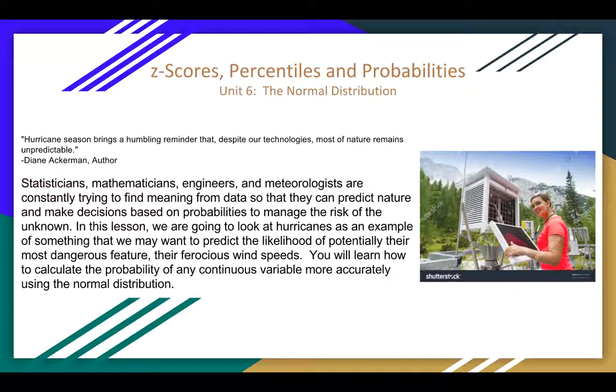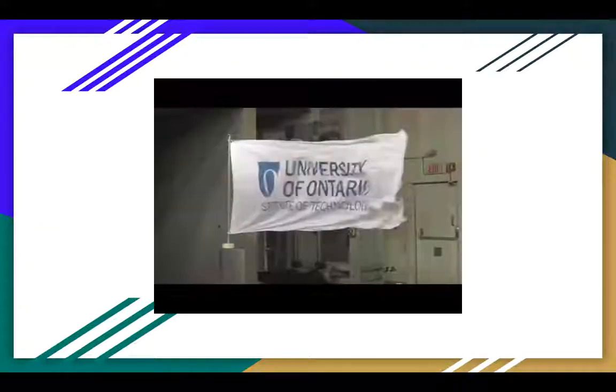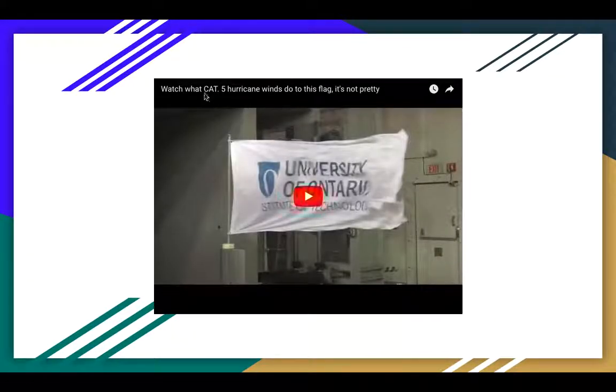And so we're going to talk about this data. I did make an assumption in this data that it's probably not accurate, probably not that normally distributed, but it still fits as a nice example. So this was a video about a Category 5 hurricane wind. We'll be talking about Category 4 or 5 hurricanes in this lesson.